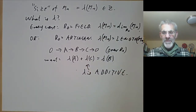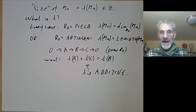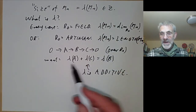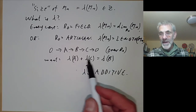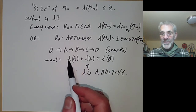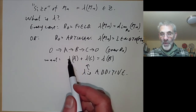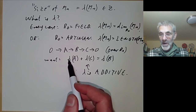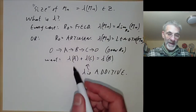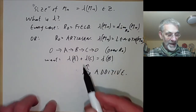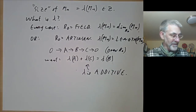If you know anything about K-theory you can state this in a rather more exotic way, saying that λ must be a homomorphism from a K-group of your ring R_0 to the integers. But that's just a fancy way of saying it's additive.